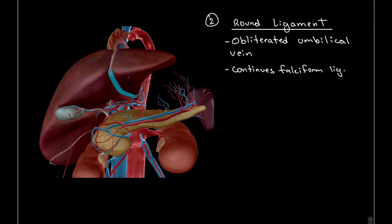It is one of the biggest ligaments and it's actually not comprised of peritoneal folds, but is the obliterated umbilical vein. Again, it continues that falciform ligament that we just talked about.